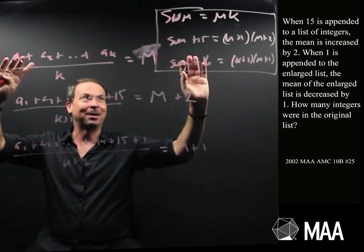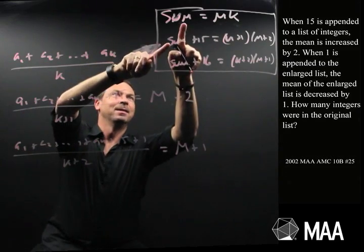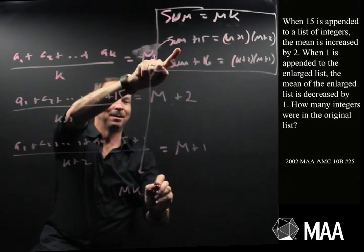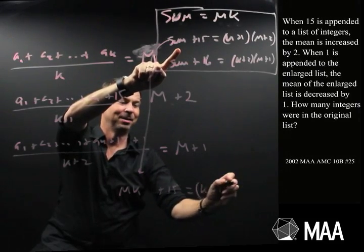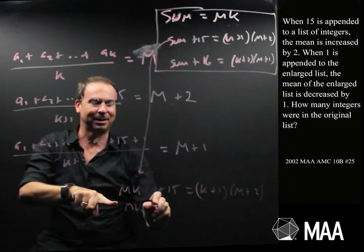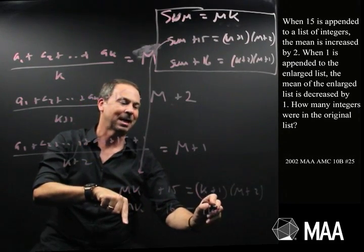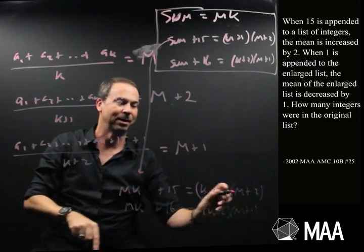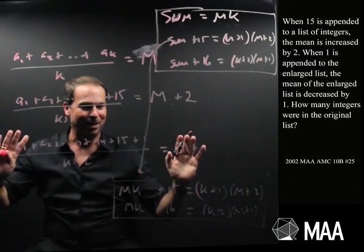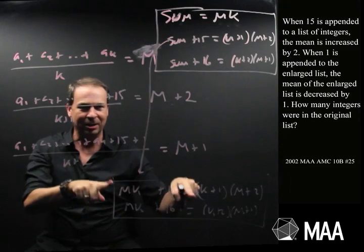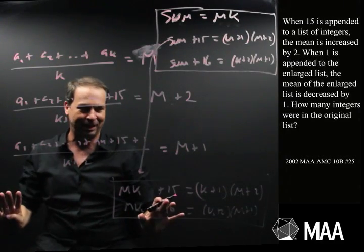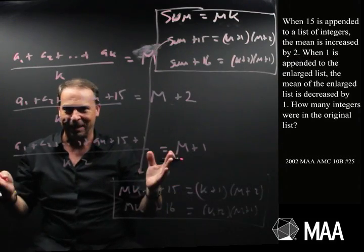Oh, actually, I can make this look much better. This is feeling good. I like this. The sum is mk. So the second equation really says mk plus 15 is k plus 1 times m plus 2. And this equation says mk plus 16 equals k plus 2 times m plus 1. That looks even friendlier. I feel like there's hope. I feel like if I stare at these equations, mess around them a little bit, maybe I can actually get an answer for what k actually is.